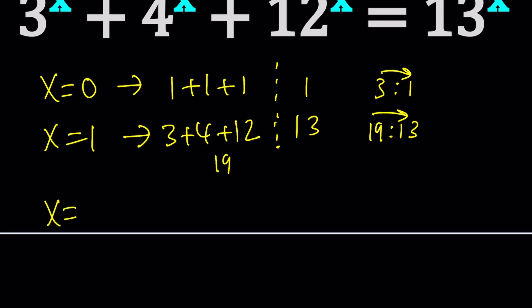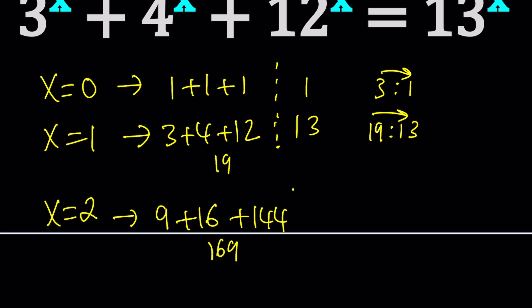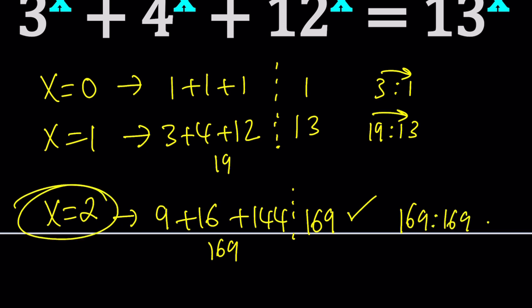This one is a little easier if you know what is called the Pythagorean theorem. If x is equal to 2, then we get 3 squared plus 4 squared plus 12 squared, which is 169 on the left. On the right we have 13 squared, which is 169. Bingo! The ratio is 1 to 1, which means they're equal. So x equals 2 is a solution.